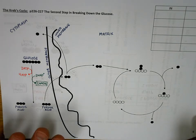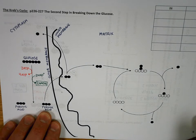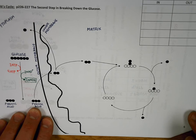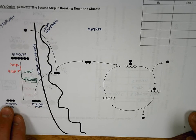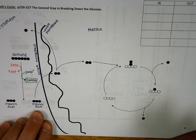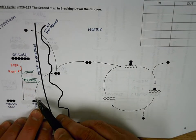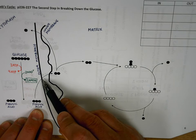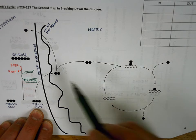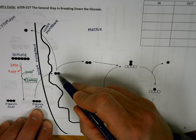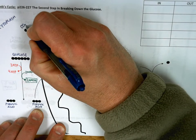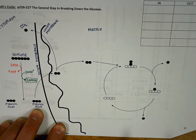Now we have to follow one of these pyruvic acids into the mitochondria. Just remember everything we say about this pyruvic acid will also be true of the other one, so we have to multiply everything by two. This pyruvic acid enters the mitochondria, probably by facilitated diffusion. As it comes in, it loses one of its carbons. That goes off as carbon dioxide, and you ultimately breathe that out when you exhale.